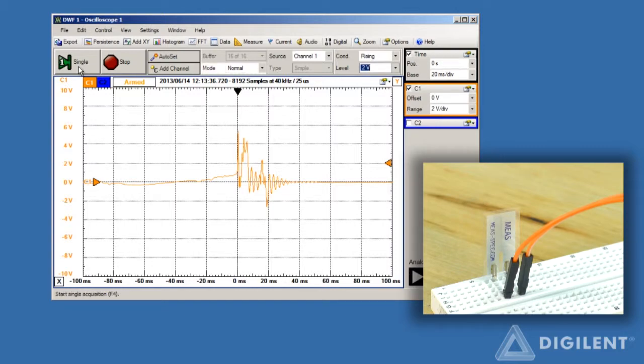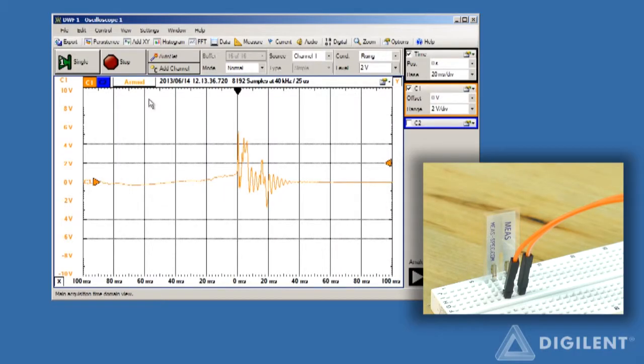If we want to take a snapshot of the waveform which won't get replaced without our permission, we can use the single button to acquire a single set of data. This also requires us to set a trigger, since the data is acquired based on the trigger condition being met. We've already set an appropriate trigger, so that step's complete.